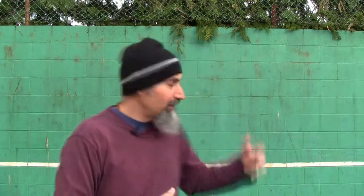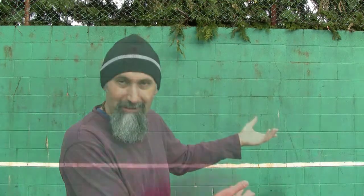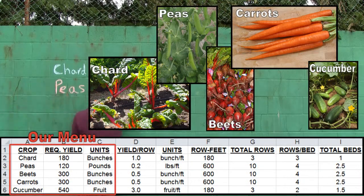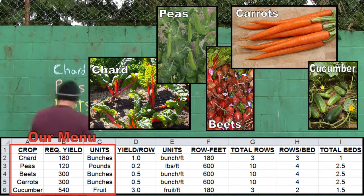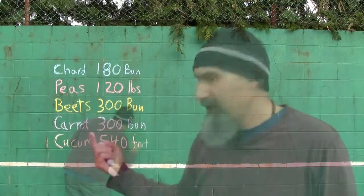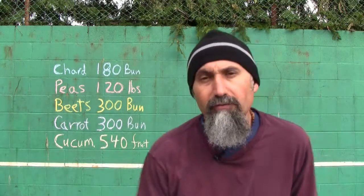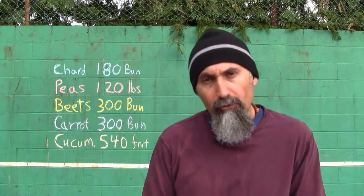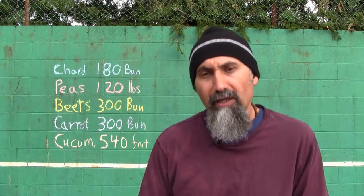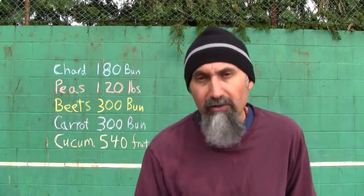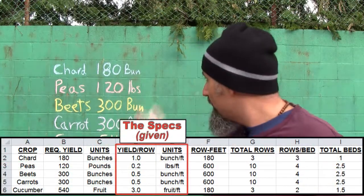We're going to set up our menu and do the calculations, hopefully coming up with a section that we're going to have to plant. This is what our menu is going to be: we're going to try to grow 180 bunches of chard, 120 pounds of peas, 300 bunches of beets, 300 bunches of carrots, and 540 cucumbers. To calculate the total row feet per item for our menu, we have to look up the specs for each one of these crops.